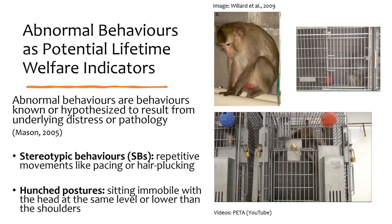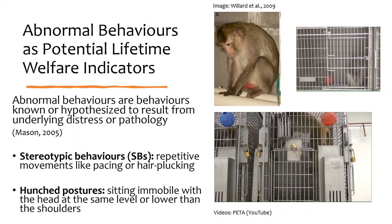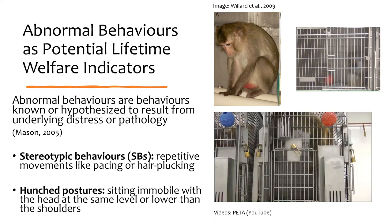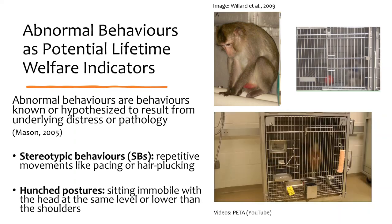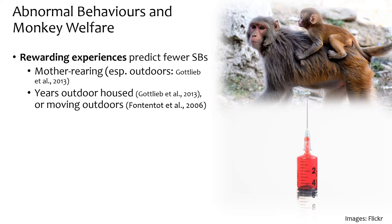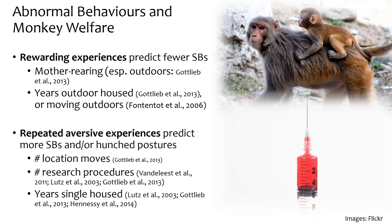There are clues from the literature that abnormal behaviours may be worth investigating as potential lifetime welfare indicators. Abnormal behaviours are behaviours known or hypothesised to result from underlying distress or pathology — including stereotypic behaviours such as pacing or hair plucking, and hunched postures, which is sitting immobile with the head at or below shoulder level. Rewarding experiences predict fewer stereotypic behaviours, while repeated aversive experiences including number of location moves, research projects, and years spent single predict more stereotypic behaviours and hunched postures. Hunched postures are also associated with pain and illness.